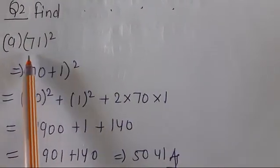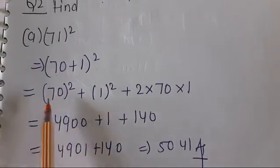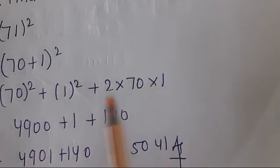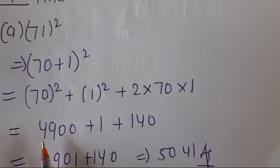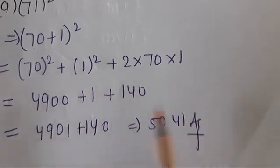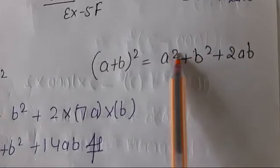Next question number, 71. Explain kera nai dhekhye, 70 + 1. (70)² + (1)² + 2 × 70 × 1 equals 4900 + 1 + 140. Then plus, so 5041.